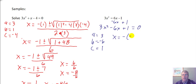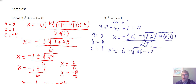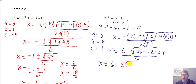Substituting into the quadratic formula, x equals the opposite of b — which is negative 6, so that's positive 6 — plus or minus the square root of b squared minus 4ac, all over 2a. So x equals 6 plus or minus the square root of negative 6 squared, which is 36, minus 12, all over 6. Simplifying further, 36 minus 12 is 24, so we take the square root of 24, which is 2 times the square root of 6, all over 6.